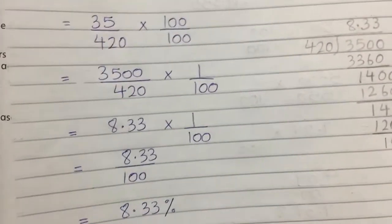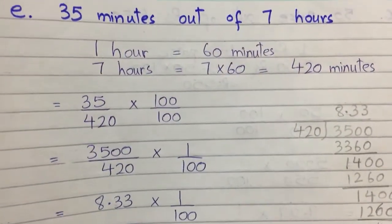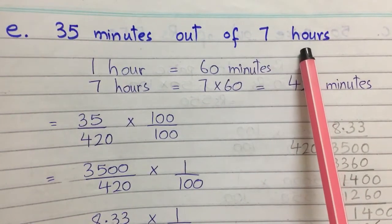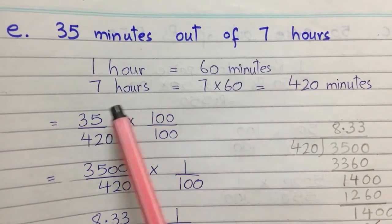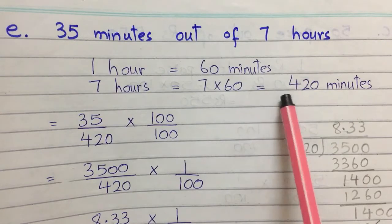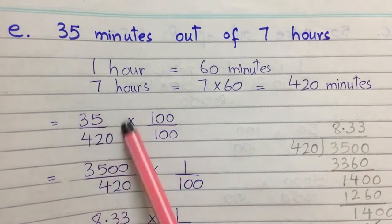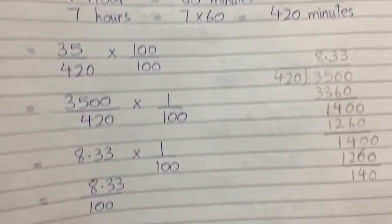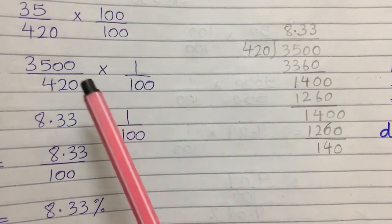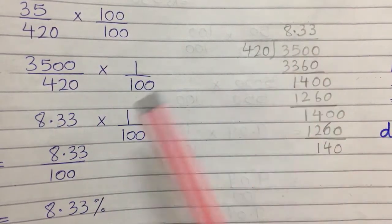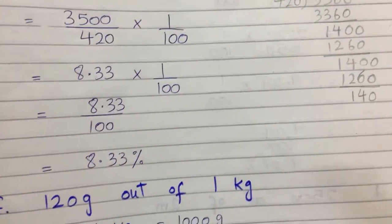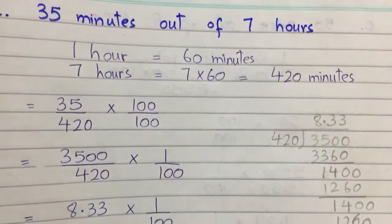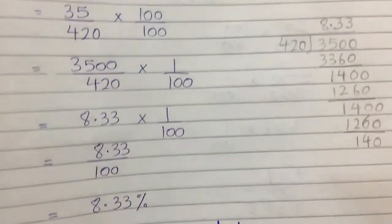Part e is: 35 minutes out of 7 hours. Convert hours into minutes: 1 hour equals 60 minutes, so 7 hours equals 7 multiplied by 60, which is 420 minutes. Write it as a fraction: 35 divided by 420, multiplied by 100 percent. Dividing gives 8.33 divided by 100, which equals 8.33 percent. So the percentage of 35 minutes out of 7 hours is 8.33 percent.